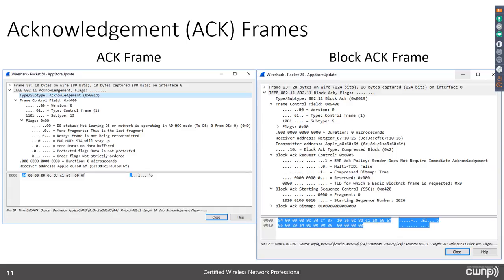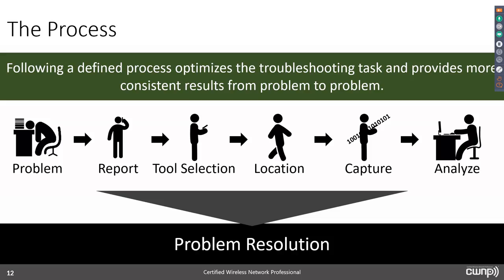Here's an acknowledgement frame — on the left is a standard acknowledgement frame and on the right is a block acknowledgement frame. Now let's talk about a very important thing: the process we go through when it comes to protocol analysis. Following a defined process is going to optimize the troubleshooting task and provide a more consistent set of results from problem to problem. It all starts with a problem — a user experiencing some pain point calls you or the help desk. The first thing you need to do is select the right tool: depending on the problem, a protocol analyzer may or may not be the right tool — it may be a spectrum analyzer or some other diagnostic tool.